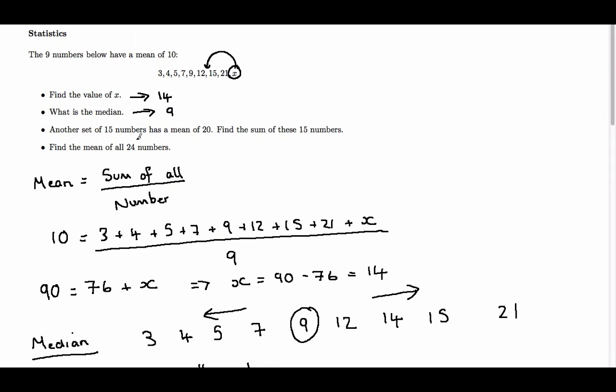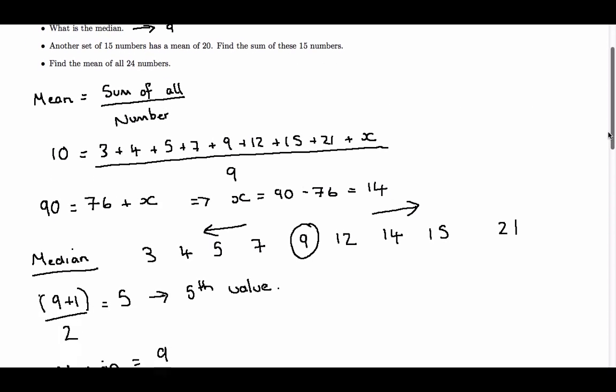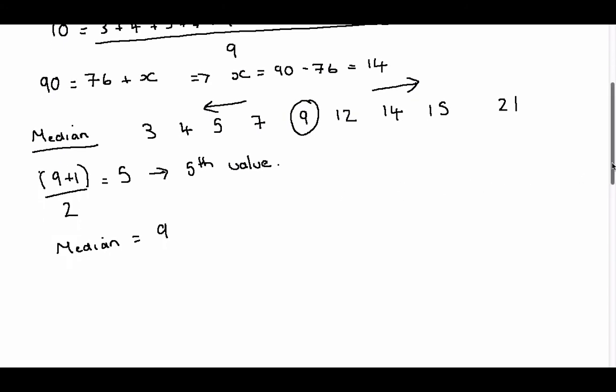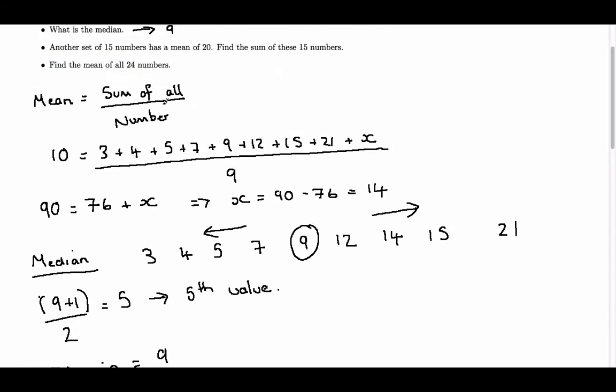Now we're told that another set of 15 numbers has a mean of 20, and we've been asked to find the sum of these 15 numbers. So again, coming back to this result here, that the mean is the sum of all the numbers over the total number there.